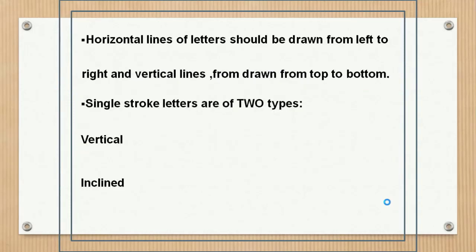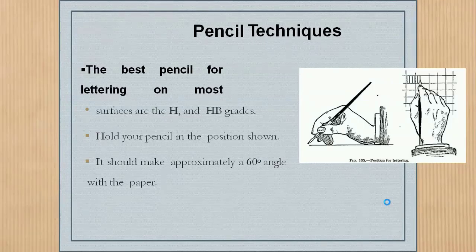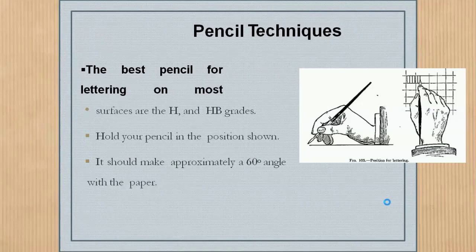There are two types of single stroke lettering: vertical and inclined. For pencil techniques, the pencils for lettering on most surfaces are H and HB grades. Hold your pencil in the position as shown in the figure — it should make approximately a 60-degree angle with the paper.